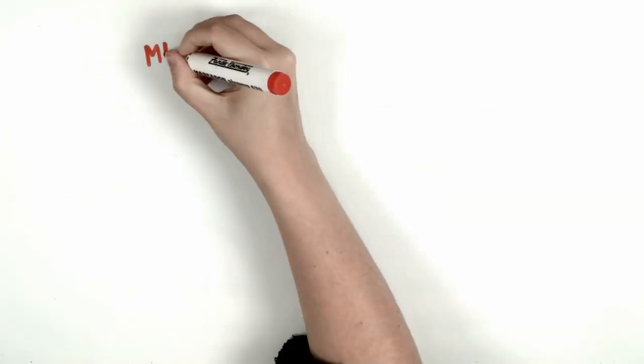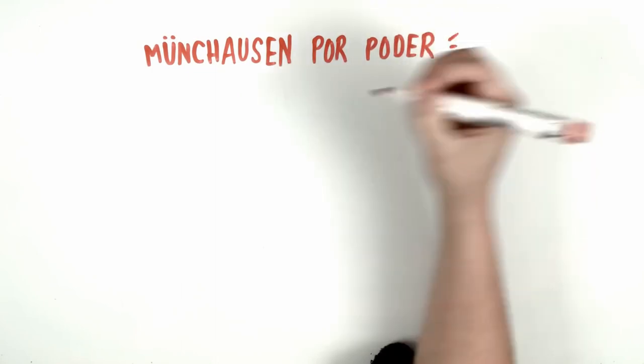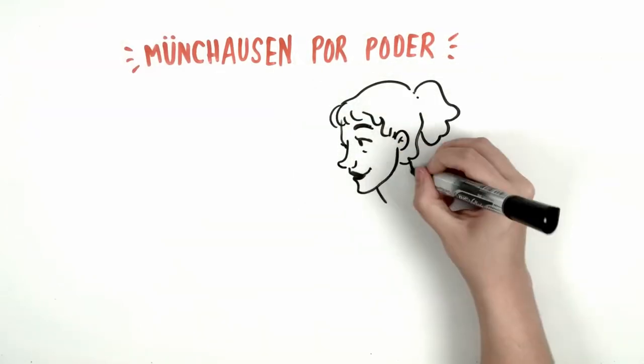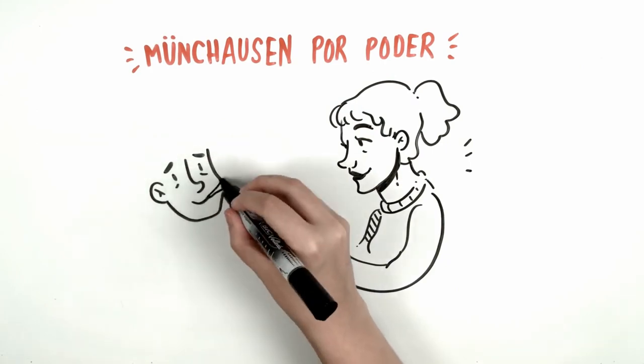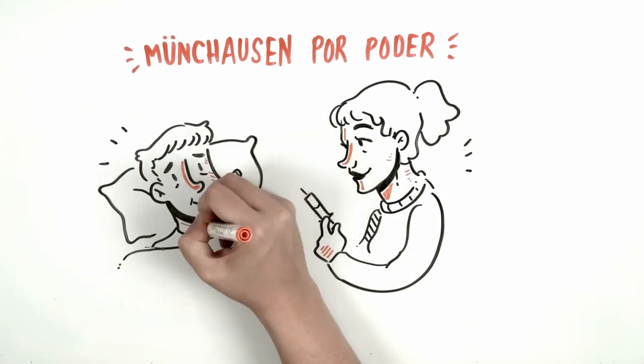Didi suffered from what is known as Munchausen syndrome by proxy, the mental illness in which the child's caregiver, often the mother, makes up symptoms or provokes them to make it look like the child is sick.